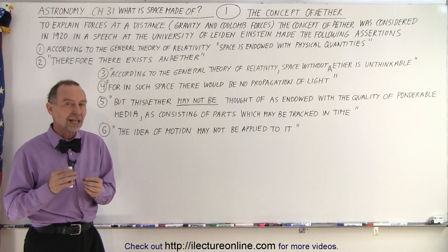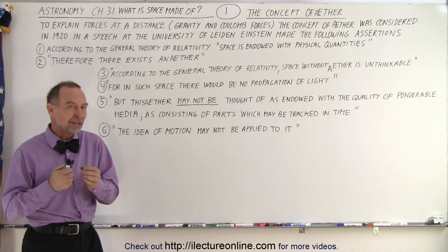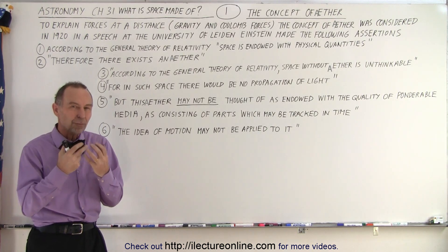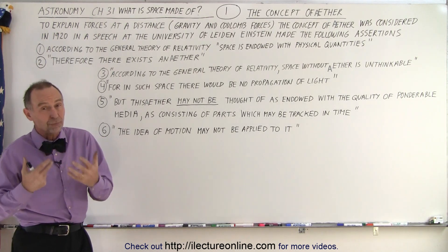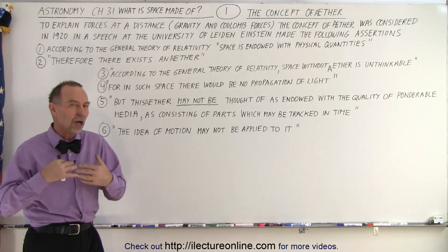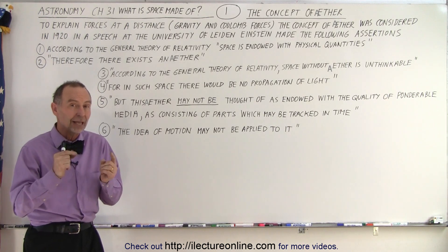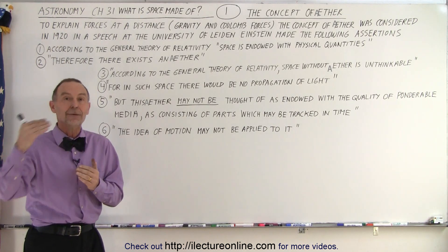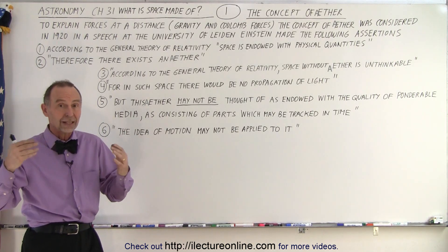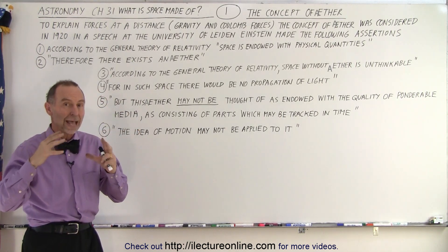In 1920, Einstein made a speech at the University of Leiden in the Netherlands and he made some interesting statements. He locked on to the concept of there being some substance in space, or that space is made of substance. They didn't know what it was — they called it ether. Remember, 1920 was just one year after he proved that light actually travels a bent path around objects that have a massive amount of mass, like a star or a galaxy. We could see light being bent through space.